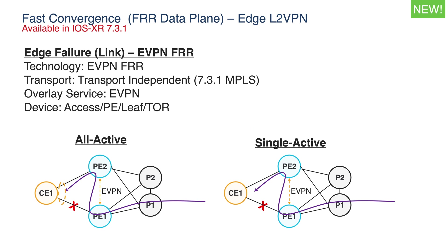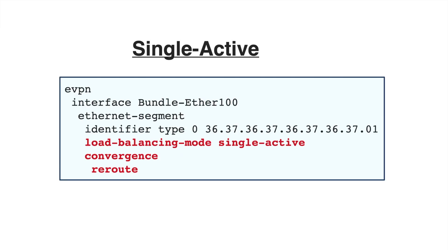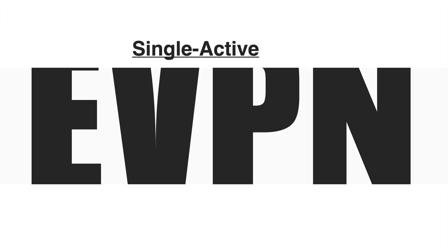This is the most important enhancement in 7.3.1. Here you can see the configuration, which is very basic. Under the Ethernet segment configuration, you will just configure convergence and reroute. You can see both all-active as well as single-active configuration.